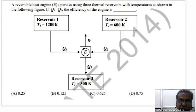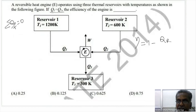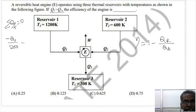A reversible heat engine operates using three thermal reservoirs with the given temperatures. Q1 equals Q2. For a reversible engine, the sum of Q by T equals zero. So Q2 by T2 (at 600 K) plus Q3 by 300 equals zero, with Q1 equal to Q2.